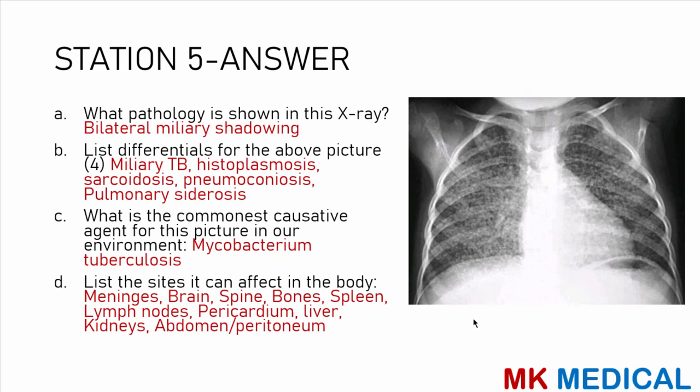The most common causative organism is Mycobacterium tuberculosis — TB. TB is a multisystemic condition; it can affect the meninges, brain, spine, bones, spleen, bone marrow, lymph nodes, pericardium, endocardium, liver, kidneys, abdomen, and peritoneum.